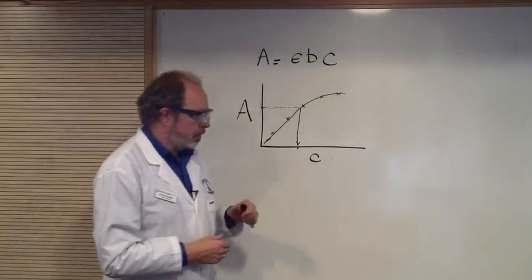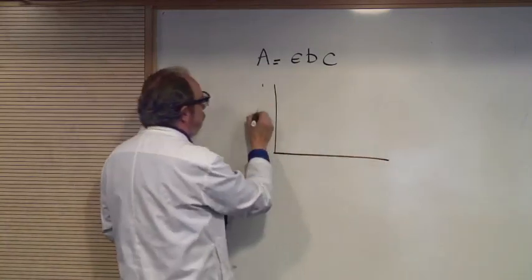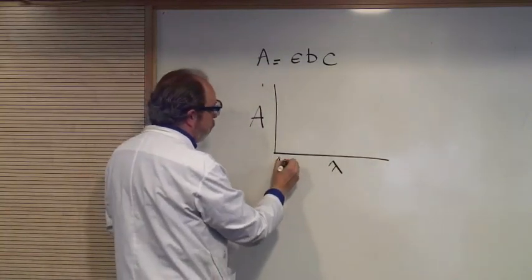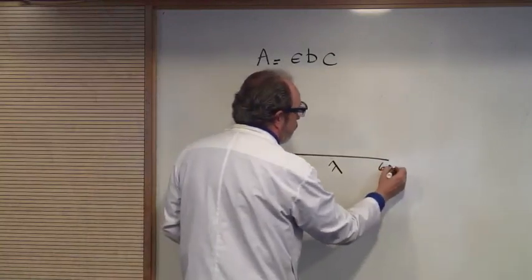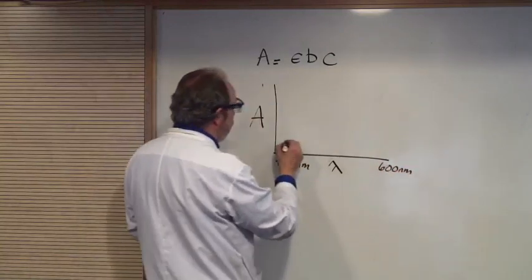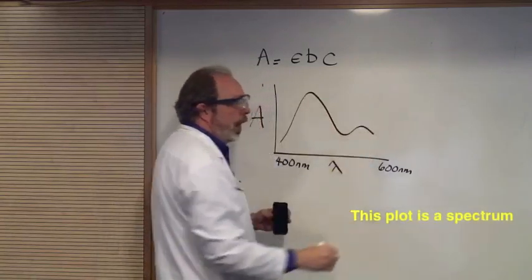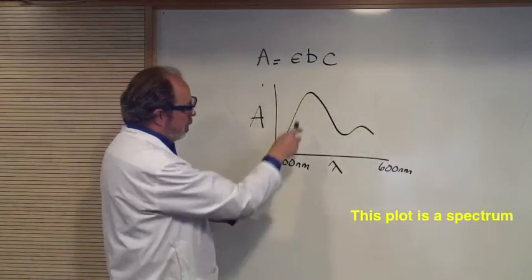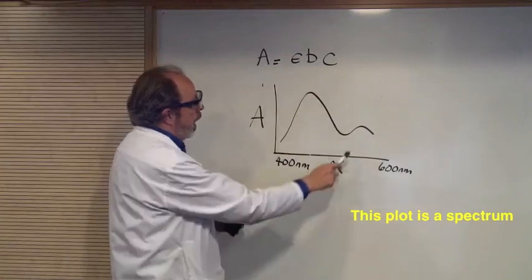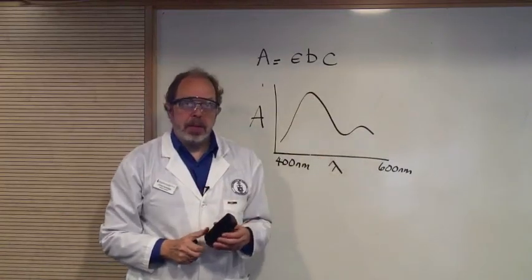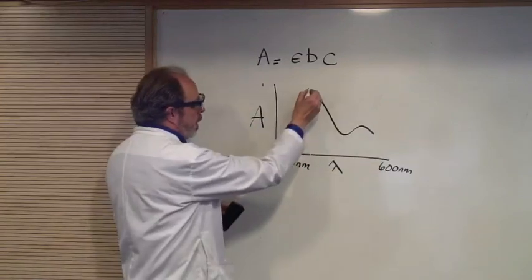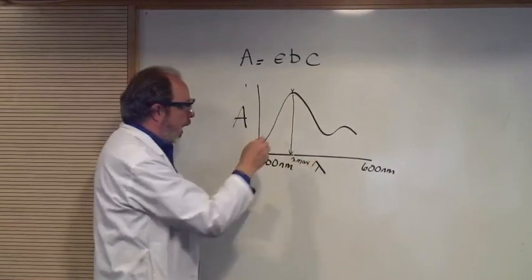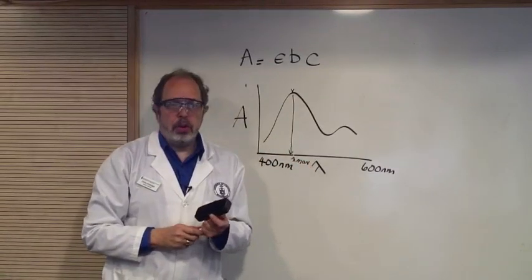Here, instead, we've got absorbance as a function of wavelength. And we could start at, let's say, 400 nanometers, and move up to 600. I'm just pulling those numbers out of the air. But you may get something that looks like that. Where the colored species absorbs lots of light at around about 450, and not very much around about 520. So, in this case, lambda max is here, and that would be the wavelength you would use for your investigation.